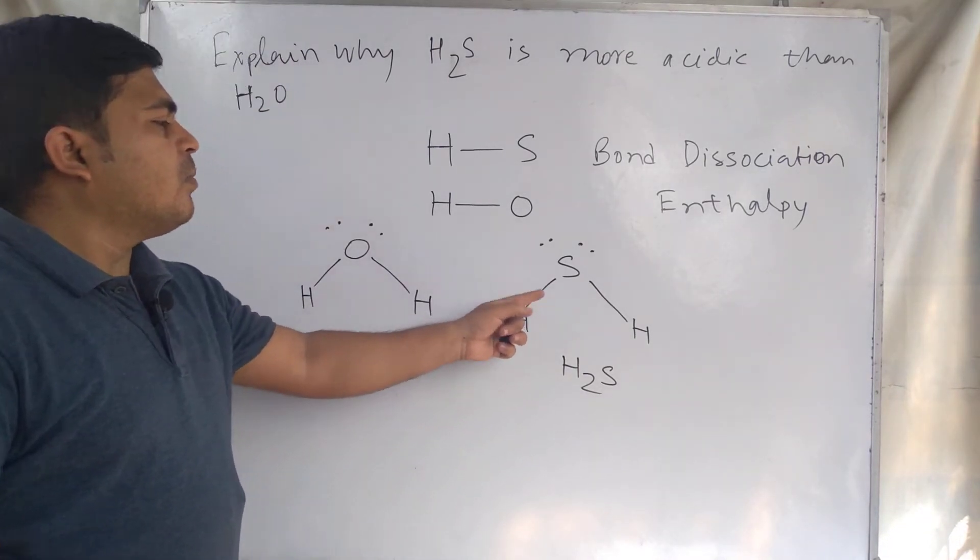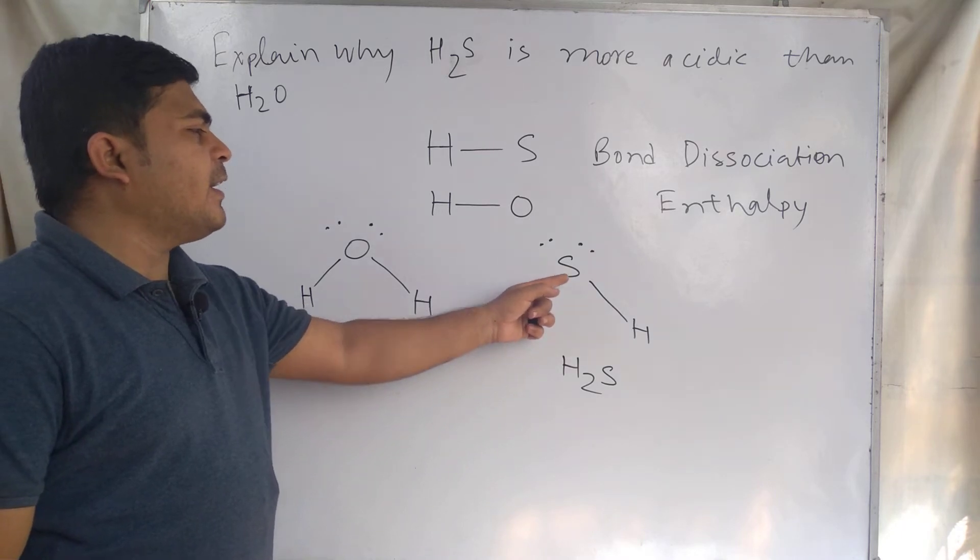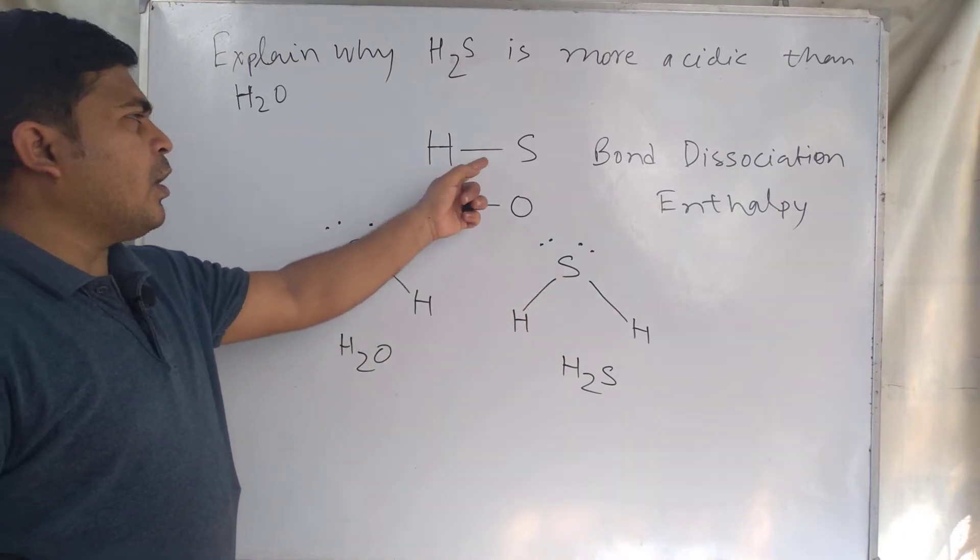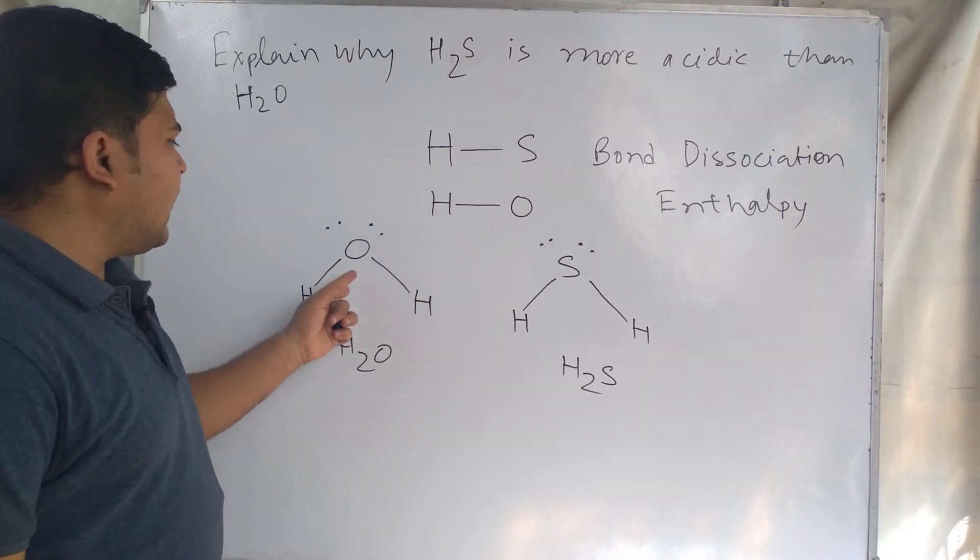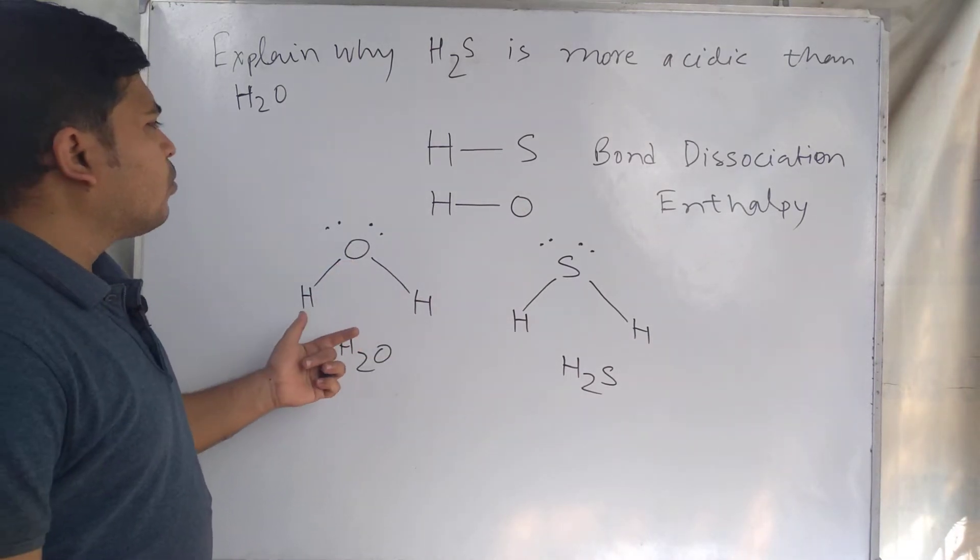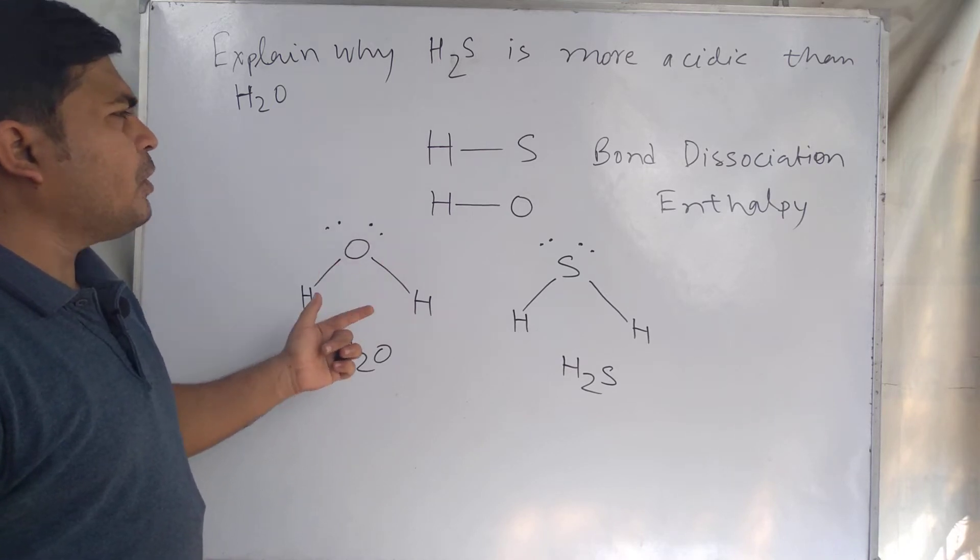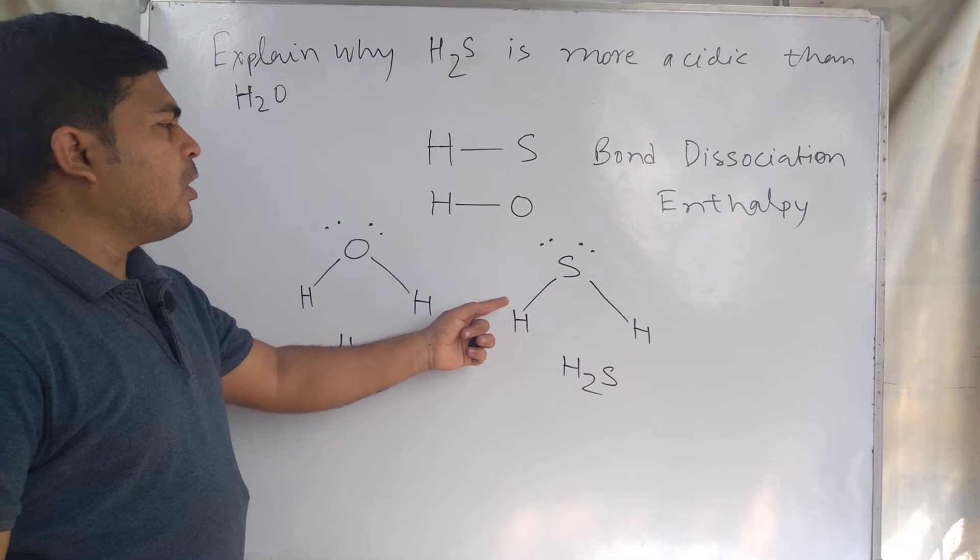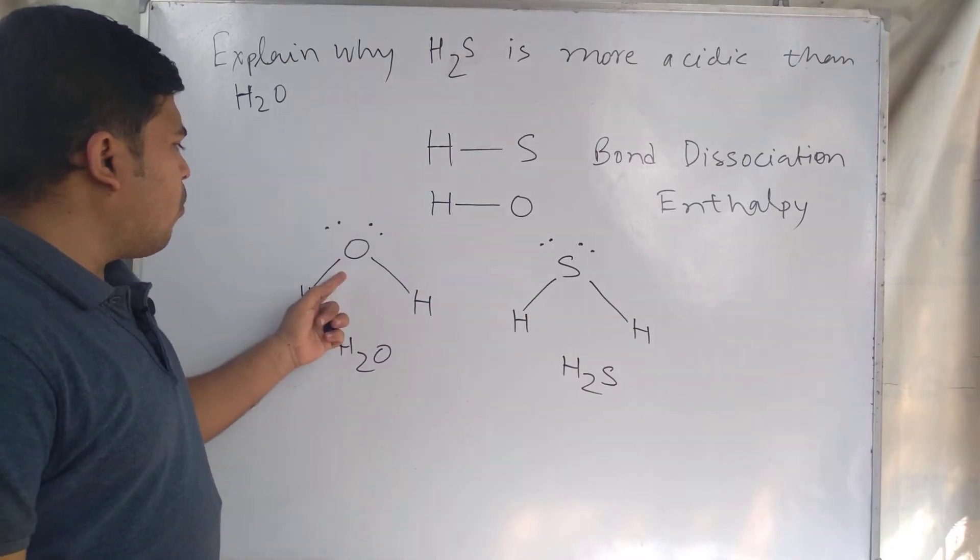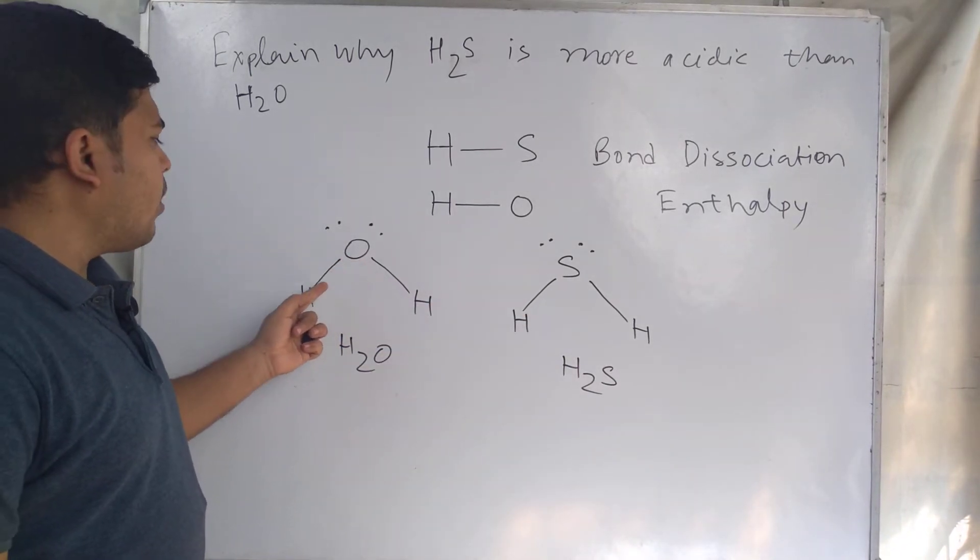Here the bond length is more in case of the hydrogen and sulfur bond. The hydrogen-sulfur bond is longer than the hydrogen and oxygen bond, and bond dissociation energy is less in case of H-S bond and more in case of O-H bond.